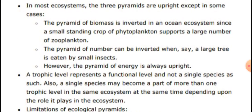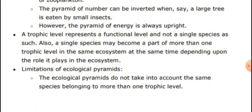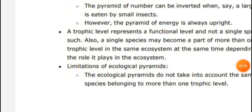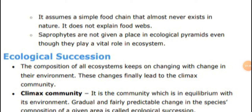The pyramid of energy is always upright. Limitations of ecological pyramids: ecological pyramids do not take into account species that belong to more than one trophic level — for example, a species that is both a primary and secondary consumer is not considered. Also, ecological pyramids assume a simple food chain that almost never exists in nature and do not explain food webs at all.